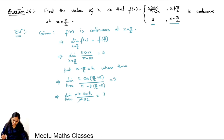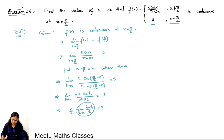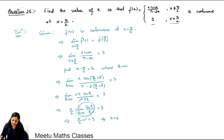The minus signs cancel from numerator and denominator, giving k/2 times the limit as h tends to 0 of sin h upon h. This limit equals 1, so k/2 times 1 equals 3, which implies k equals 6.